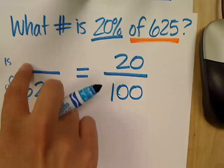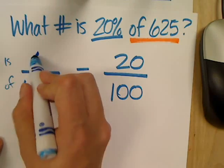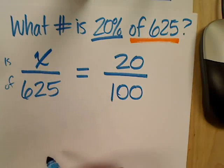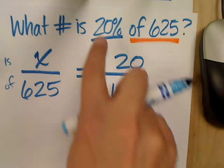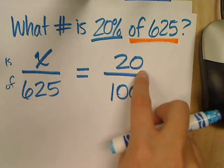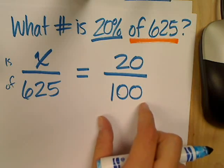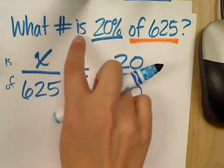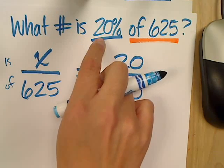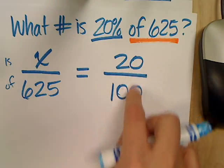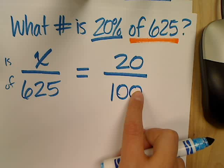And so, the only value I don't know is this is value, the part. So that can be X. Would it be 20%? No, because remember, I've used this 20% over here. And this ratio over here is always going to be my percent. So don't let that is confuse you in front of the 20%. If it's got a percent sign, it absolutely has to go over here in this right ratio.